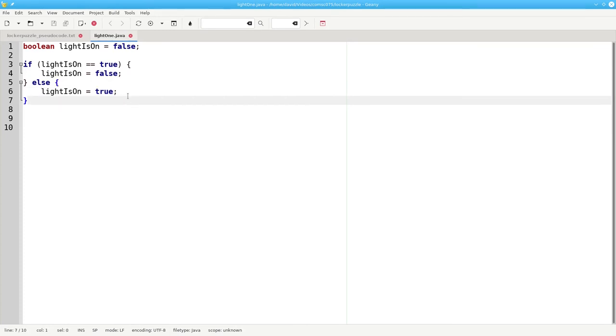This works, but it's not good coding practice. First, lightIsOn is already a boolean. Instead of comparing it to true, we can directly ask if lightIsOn, which will be a true or false value. That's better.